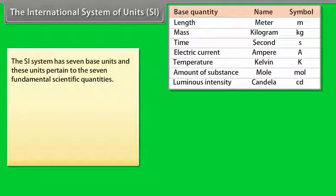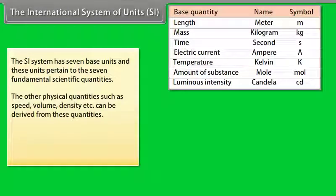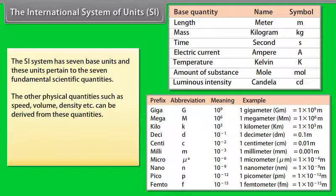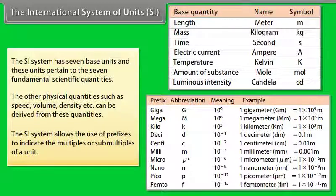The SI system has seven base units and these units pertain to the seven fundamental scientific quantities. The other physical quantities such as speed, volume, density, etc. can be derived from these quantities. The definitions of the SI base units are given in table. The SI system allows the use of prefixes to indicate the multiples or sub-multiples of a unit.